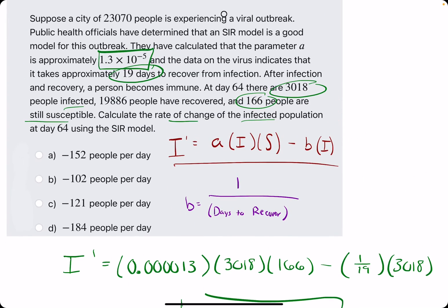We have negative 152 people per day, so it looks like option A just might be our answer. And it is.